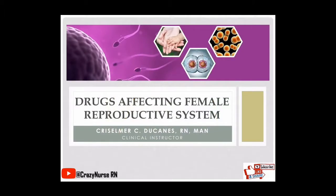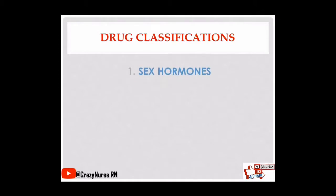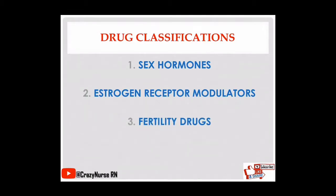Now we're done with the introduction to the reproductive system of both male and female. Let's proceed to the drugs affecting the female reproductive system. The drug classifications include sex hormones, estrogen receptor modulators, fertility drugs, and uterine motility drugs.